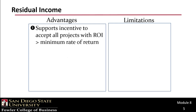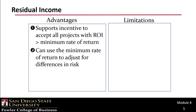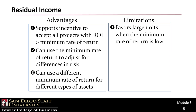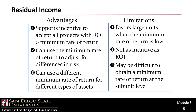The advantages of residual income include that it supports the incentive to accept all projects with ROI greater than the minimum rate of return — a limitation of the ROI method. You can also use the minimum rate of return to adjust for differences in risk, applying a different rate to different business units, and a different minimum rate for different types of assets. However, residual income favors large units when the minimum rate of return is low, it's not nearly as intuitive as ROI, and it can be difficult to obtain a minimum rate of return at the subunit level.